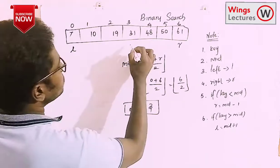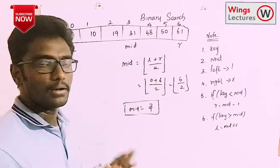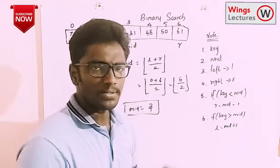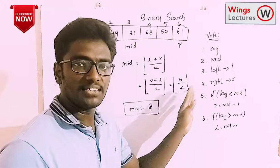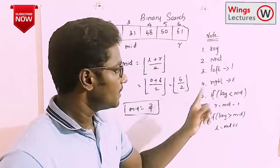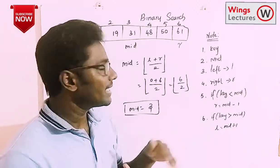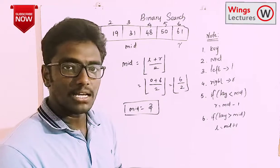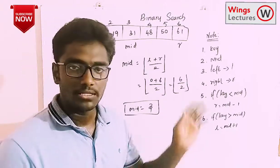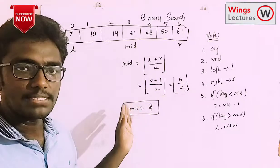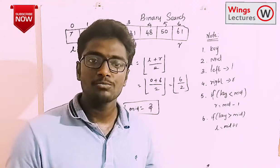After finding mid, we apply specific conditions to filter the data. The conditions are: if the key value is less than mid, greater than mid, or equal to mid. When we go through the example, it will become clear.